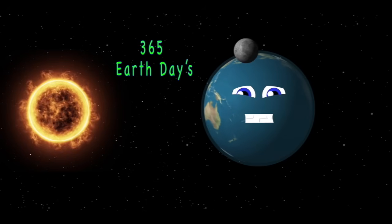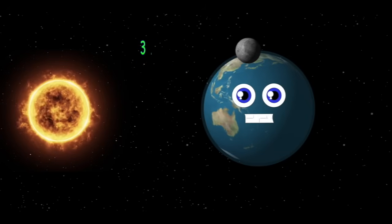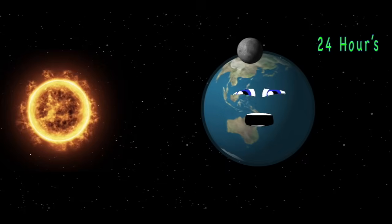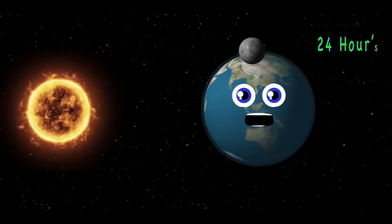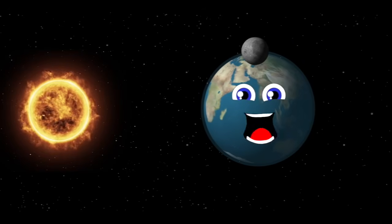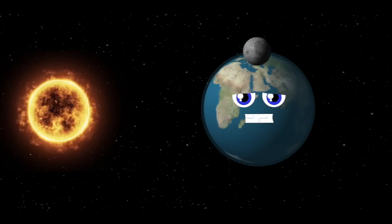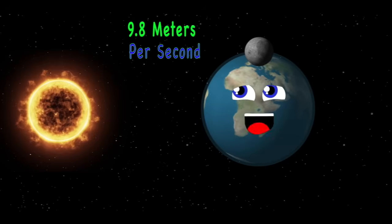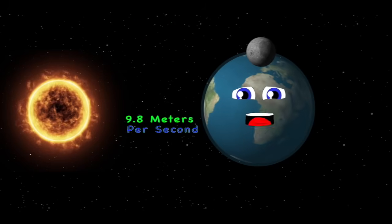It takes 365 Earth days to orbit the sun. 24 hours makes one day, that's just one time that I'm spun. You won't fly off into space, gravity's pulling you down. As fast as 9.8 meters a second towards the ground.